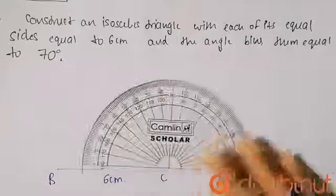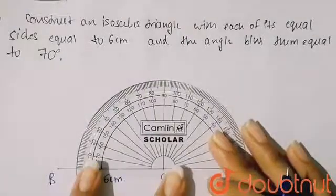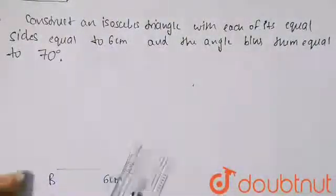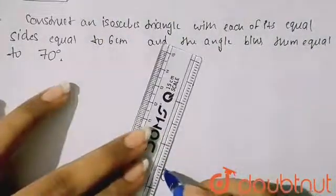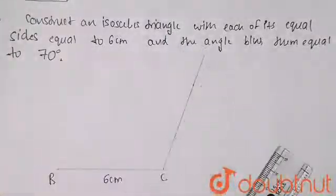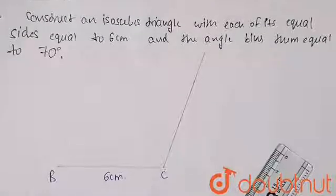So with the help of this protractor, I am drawing the angle 70 degrees. The 70 degree line will be passing from this point. From this, your line will be passing like this.